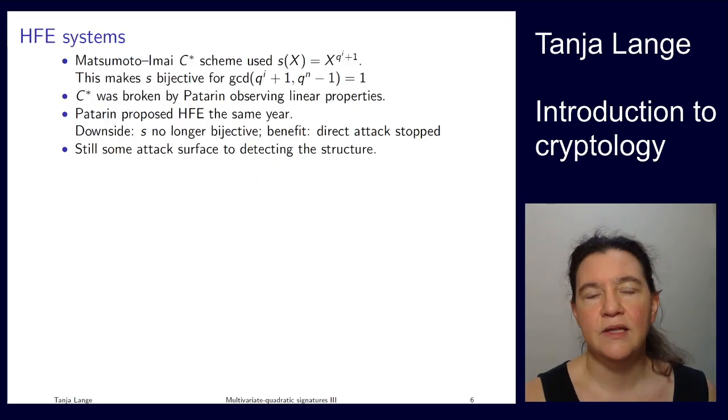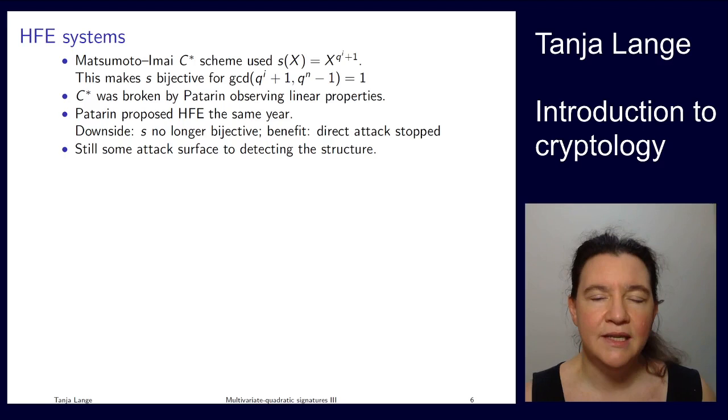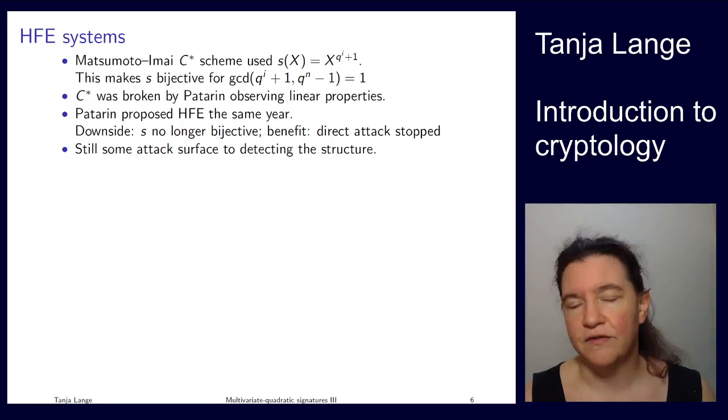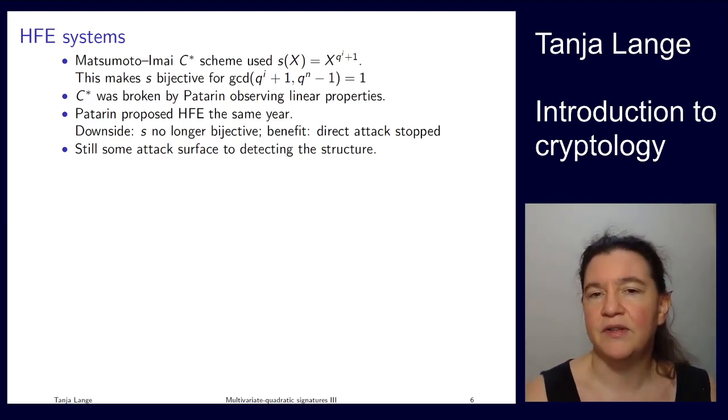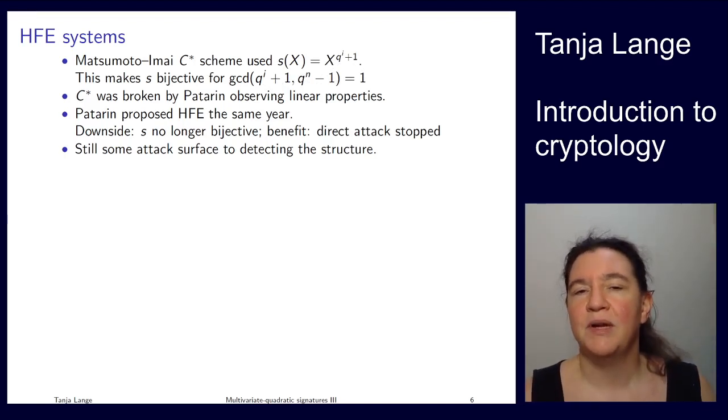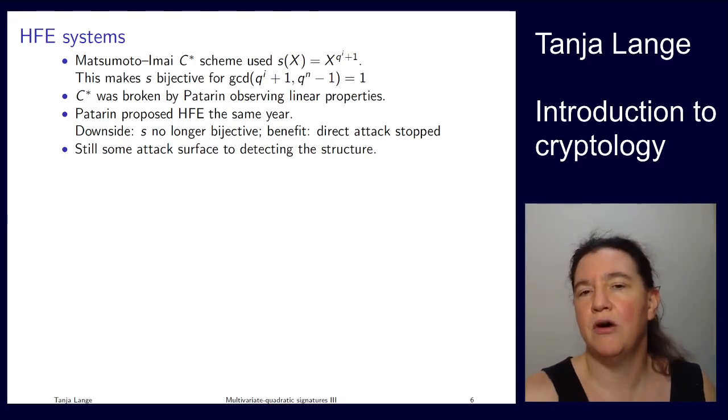Historically, this comes from an early system due to Matsumoto and Imai from 1988. That one has a particularly easy central map—this polynomial s(X), which is just one single term, just this X^{q^i+1}. The nice part of this is that s is bijective, so we don't have to worry whether pre-images exist—they exist and there's exactly one of them. The F_{q^n} prime field multiplicative group has order q^n-1. If you're picking q^i+1 to be coprime with this, then this is an exponentiation which we can just invert by taking the Euclidean algorithm of q^i+1 and q^n-1. Then we know how to invert this very efficiently.